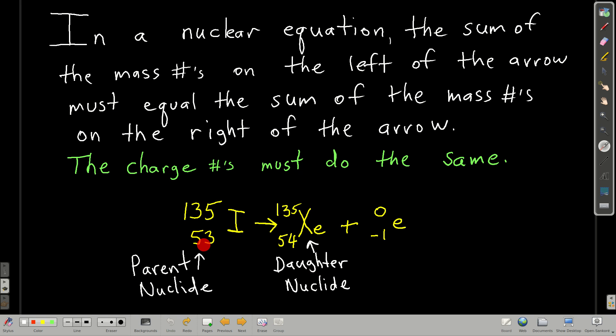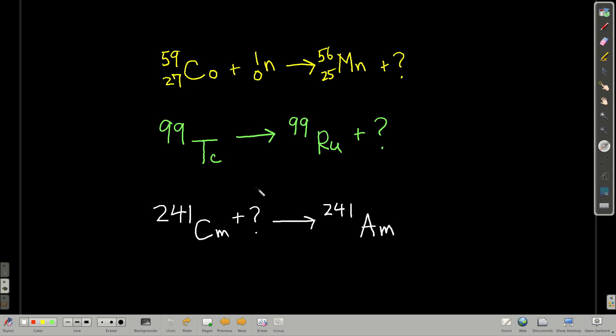Notice that it's still true that the number of protons determines which element this species is. So if we know what this number has to be down here, for example, like say we figured out somehow that it had to be 54, we would know that this is xenon.